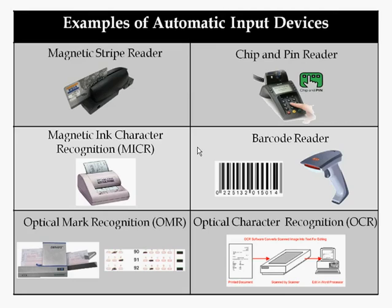Barcode readers we probably see on a daily basis. When we're in shops the barcode scanner reads the barcode number on a product, then looks that number up in a database and returns the product's details and price. OMR — optical mark recognition — recognises marks, specifically the positions of pencil marks on paper, and compares those marks to a template. These are often used in multiple choice exams and in shops where people are choosing their lottery numbers.